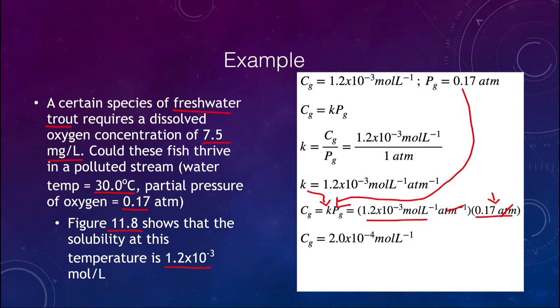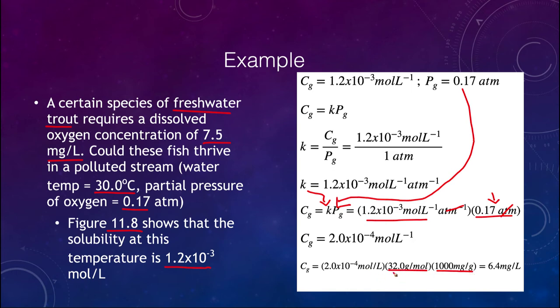We need to convert to milligrams per liter. Oxygen has 32 g/mol, and converting from grams to milligrams, the moles cancel and the grams cancel, leaving us with mg/L. Multiplying through, we find 6.4 mg/L — which is below the 7.5 mg/L that the trout need to thrive. So the fish would begin to die off because there is not enough dissolved oxygen due to the higher temperature.